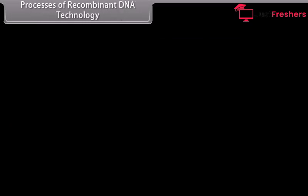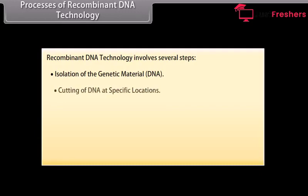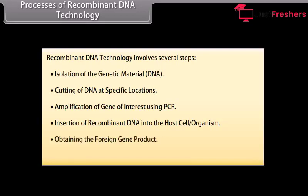Processes of recombinant DNA technology. Recombinant DNA technology involves several steps: isolation of the genetic material DNA, cutting of DNA at specific locations, amplification of the gene of interest using PCR, insertion of recombinant DNA into the host cell organism, obtaining the foreign gene product, and downstream processing.